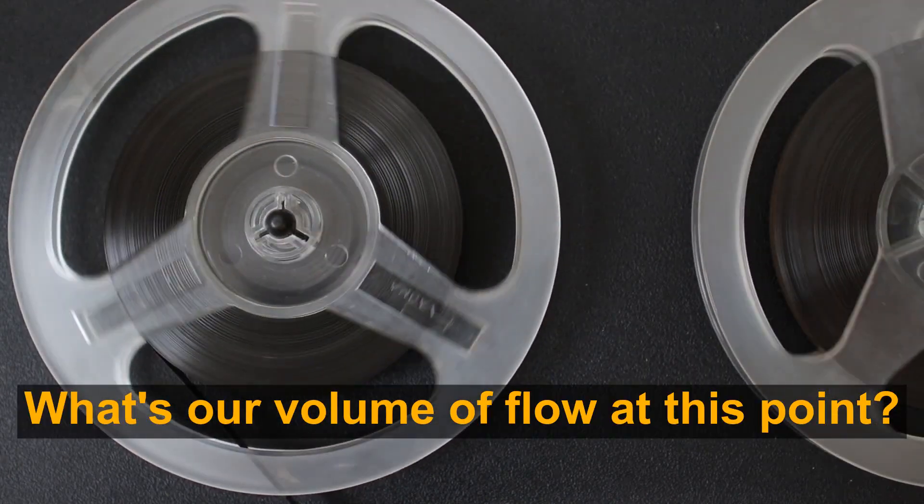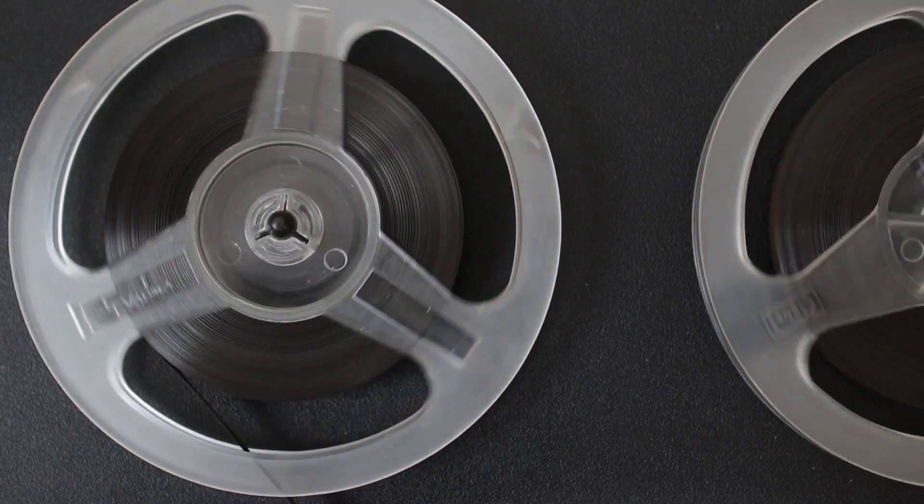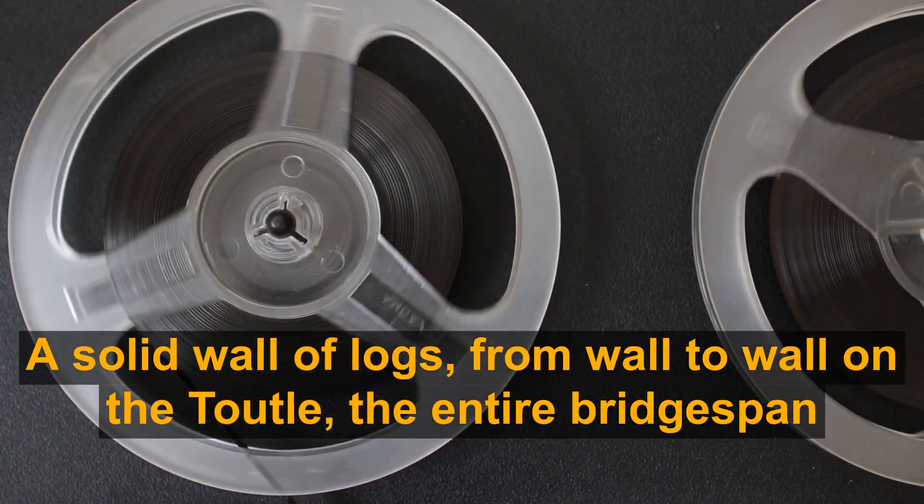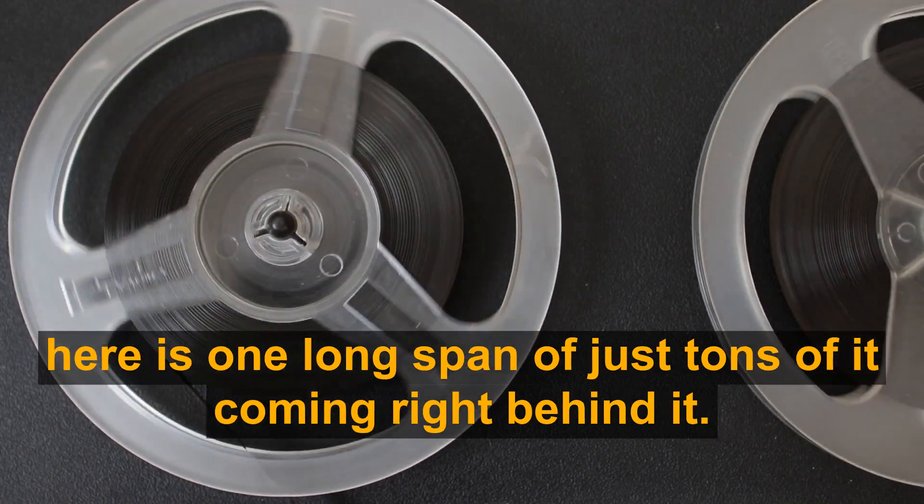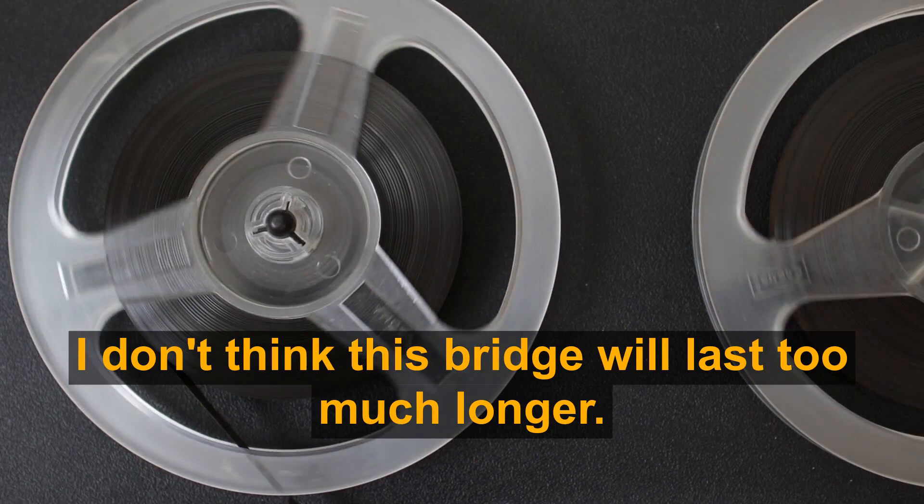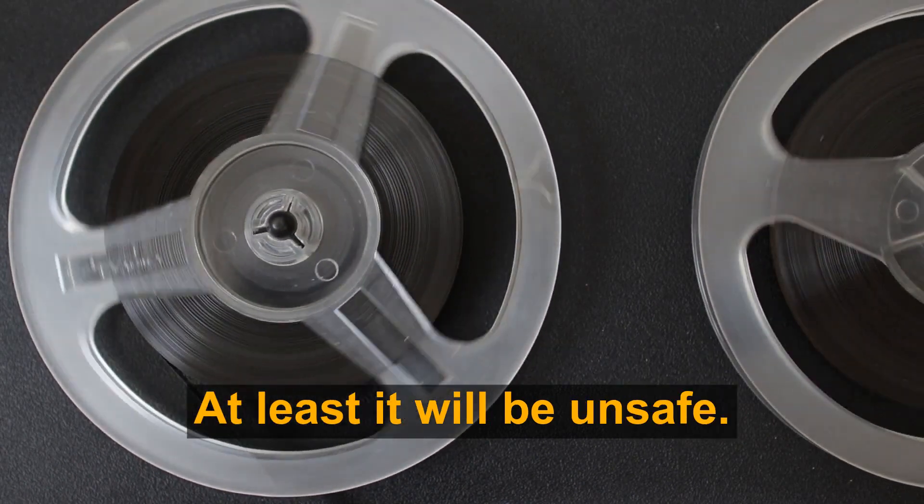What's our volume of flow at this point? Solid wall of logs from wall to wall on the Tuttle. The entire bridge span here is one long span of logs. There's just tons of it coming right behind it. I don't think this bridge will last too much longer. At least it will be unsafe.